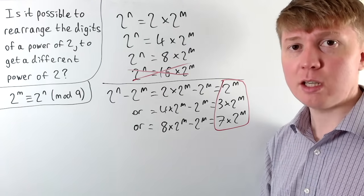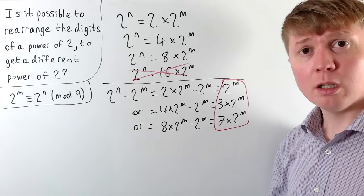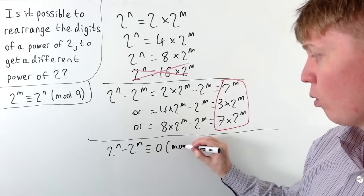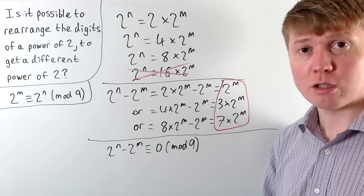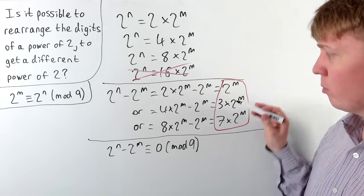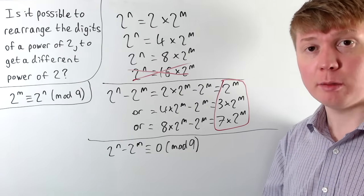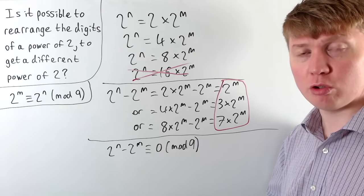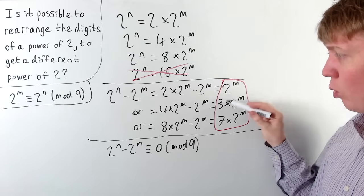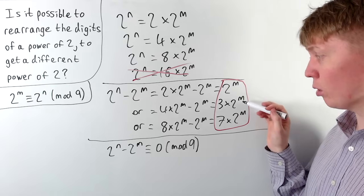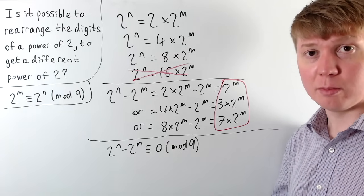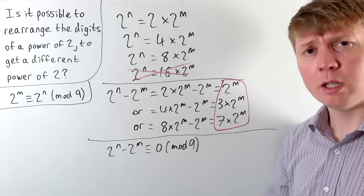Since the two powers of 2 are equivalent to each other modulo 9, their difference must be equivalent to 0 modulo 9 — it must be a multiple of 9. But looking at our three possibilities: 2^m can't be a multiple of 9 because its prime factorization contains only 2s, never two factors of 3. Similarly, 3·2^m has only one factor of 3, so it can't be a multiple of 9 either. And 7·2^m contains no factors of 3 at all, so that's also impossible. None of these differences can ever be a multiple of 9.